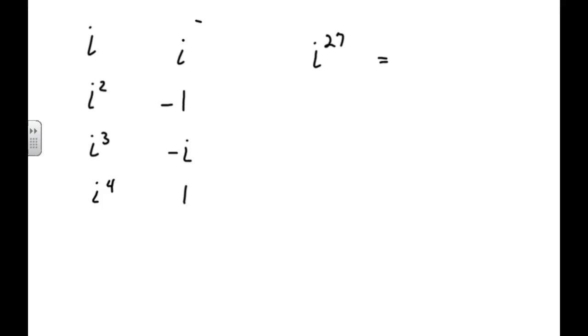But this little pattern here holds true for every four i's that we have. So like i to the fifth is the same value as i, i to the sixth is the same value as negative one, i to the seventh is the same value as i cubed, i to the eighth is the same value as i to the fourth. With that logic, that means that every multiple of four in the exponent is going to give me a value of one. So i to the eighth, i to the twelfth, i to the sixteenth, i to the twentieth, all of those.